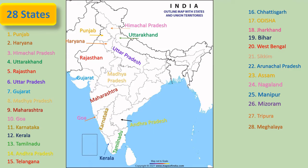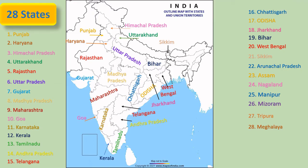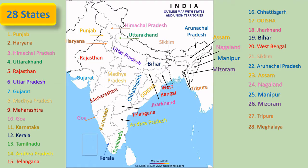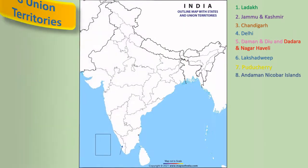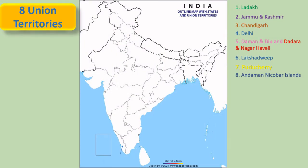This is Tamil Nadu, this is Andhra Pradesh, this is Telangana, this is Chhattisgarh, this is Odisha, this is Jharkhand, this is Bihar, this is West Bengal, this is Sikkim, this is Arunachal Pradesh, this is Assam, this is Nagaland, this is Manipur, this is Mizoram, this is Tripura, this is Meghalaya.